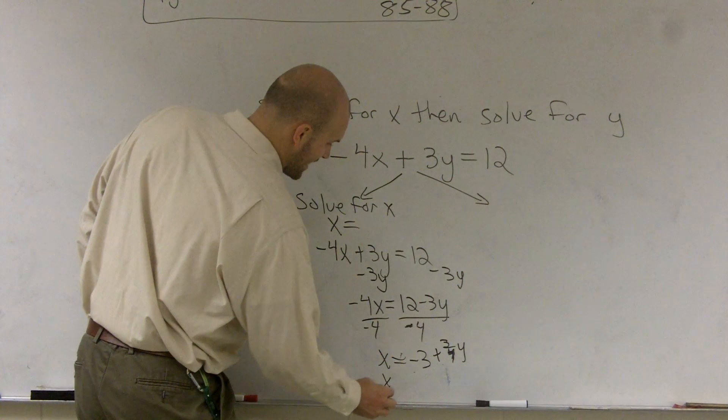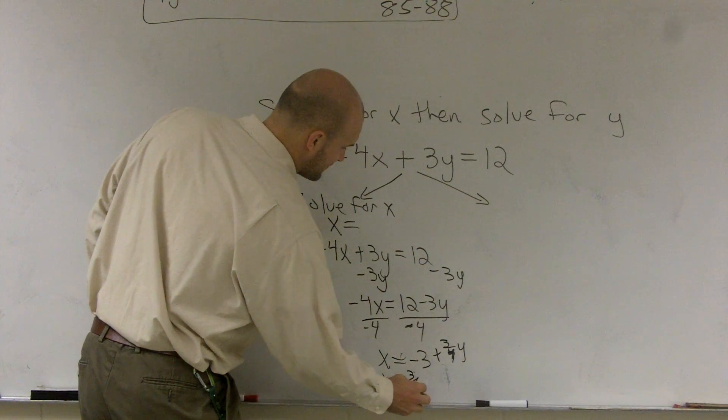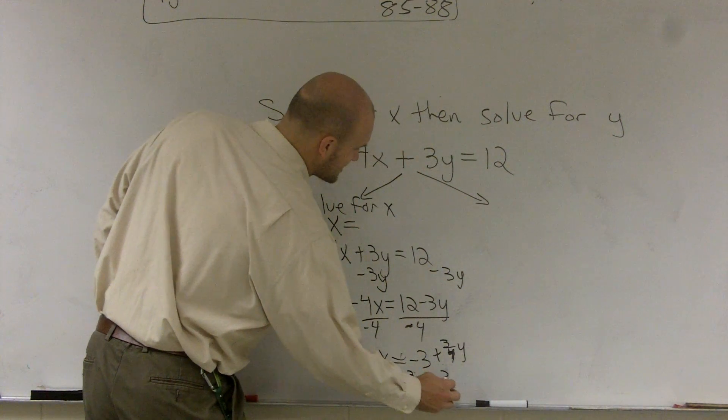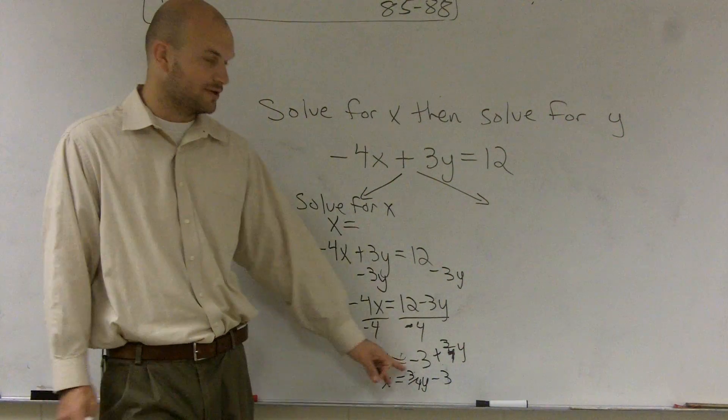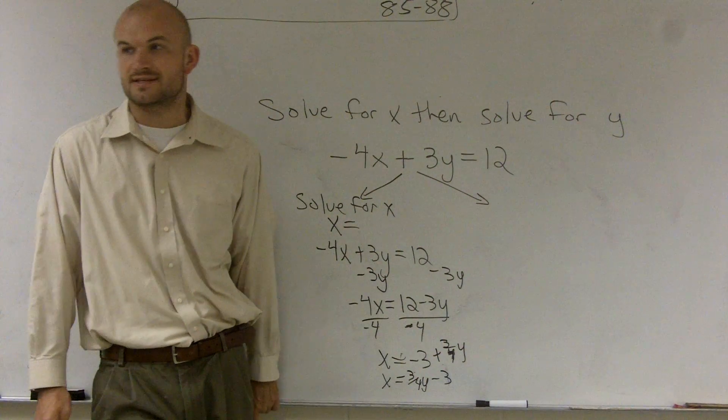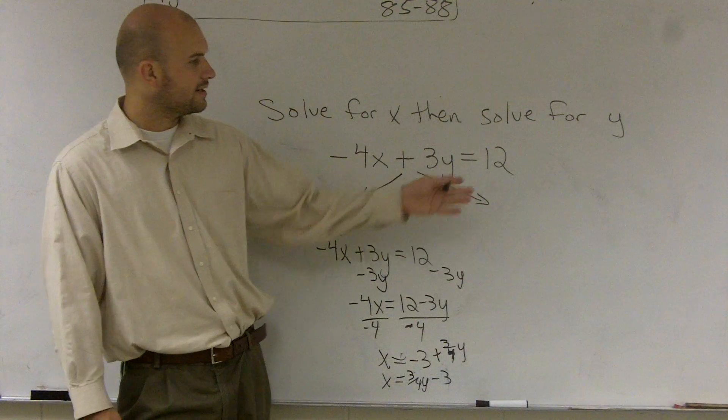As I'm done completing, x equals 3 fourths y minus 3. So that's what you're talking about. We usually like to always write the variable in front of our constant. All right?